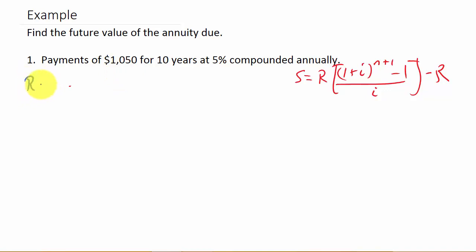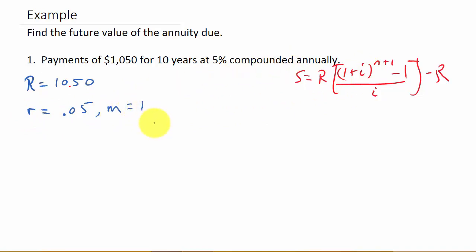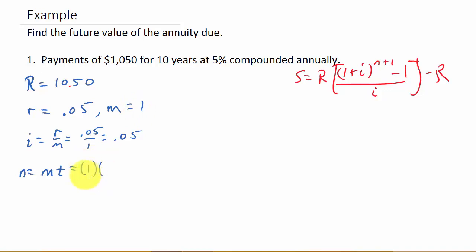R is equal to 1,050. We need little r, the interest rate — it's 5%, so r is 0.05. M, compounded annually, equals 1. So now we can find I, which is r over M, which is 0.05 over 1, which equals 0.05. And then N is M times T — M is 1 times T, the number of years is 10, so N equals 10.